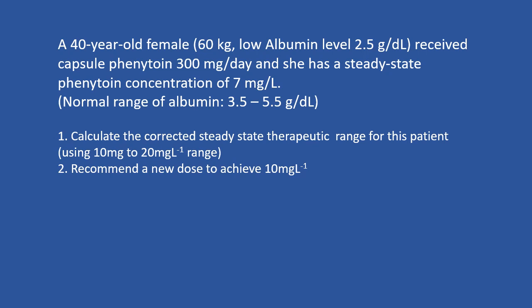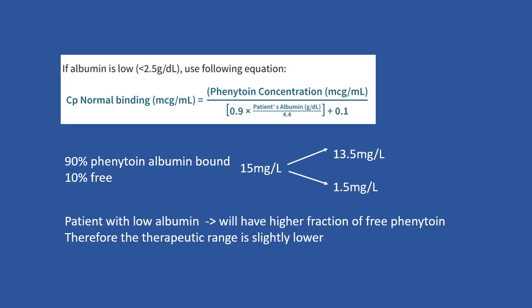In this question we will look at the calculation for a patient with a low albumin level. Before we do the calculation, let's do a brief revision. The equation we use in this case is slightly different because we need to take into account the albumin level. Phenytoin is highly bound to albumin — when we measure the therapeutic range, we are measuring both free phenytoin and albumin-bound phenytoin, with 90 percent bound to albumin.